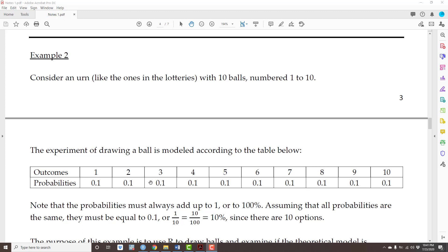Just a quick review of fractions here. 0.1 is the same as 1 divided by 10, by definition. If you multiply the numerator and the denominator by 10, it doesn't change the fraction. And now I have 10 over 100.